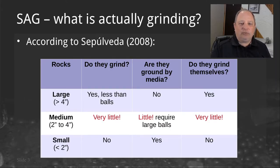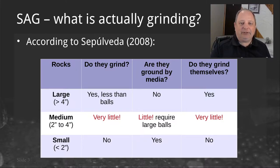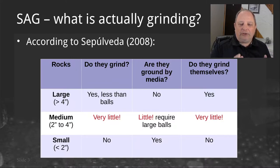We're going to discuss what's going on inside of the mills in order to understand the differences between AG, SAG, and BAG types. The mill contains two types of material: rocks and media. According to Sepulveda from his 2008 Prosiman paper, large rocks can be used to grind small rocks — they don't do as good a job as a steel ball, but it works. This is the basis for autogenous milling.